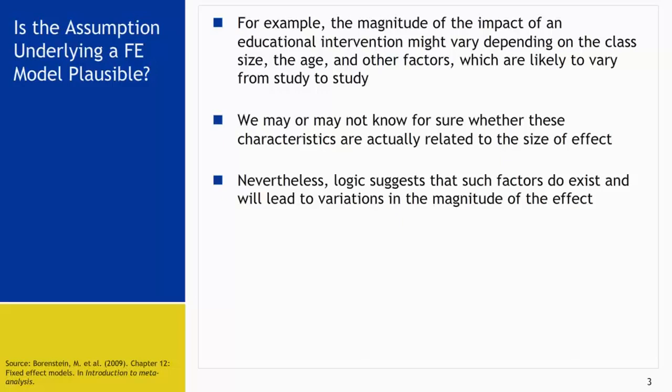But for the most part, what you're going to have for your systematic review and meta-analysis are different studies done by different investigators in different places. We may or may not know for sure whether these characteristics are actually related to the effect size. For example, vitamin D studies done in the United States are going to be different from those done in Asia because some countries are closer to the equator and will have more sun exposure, so their baseline vitamin D levels in participants are different.